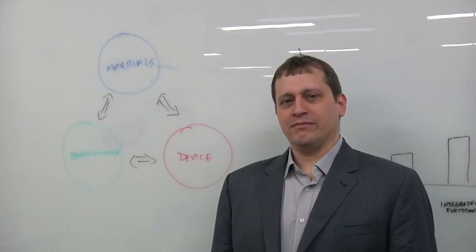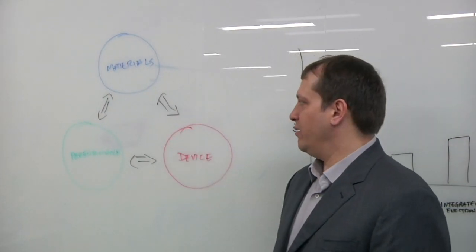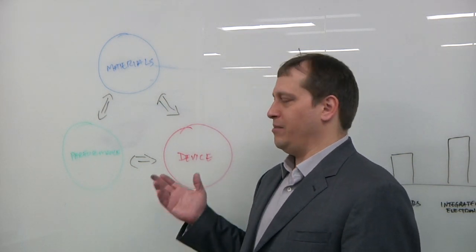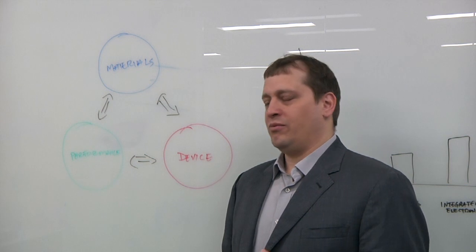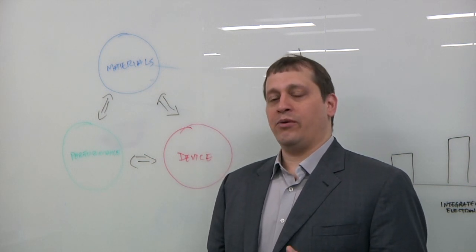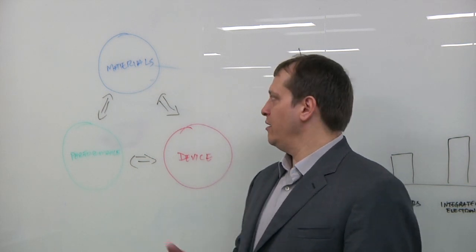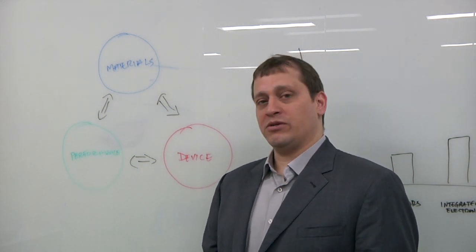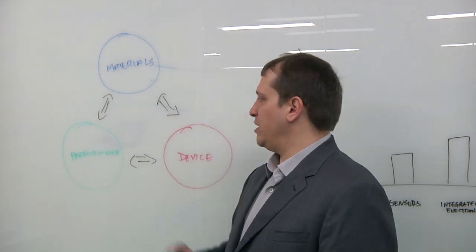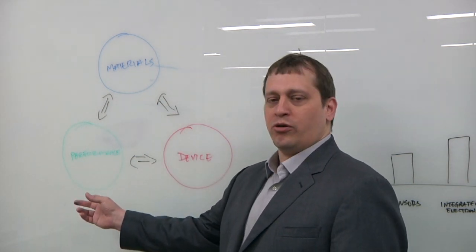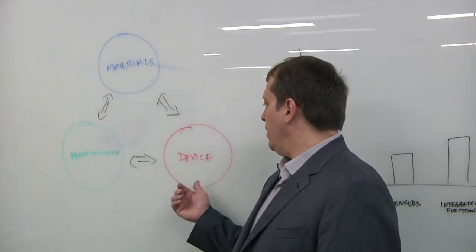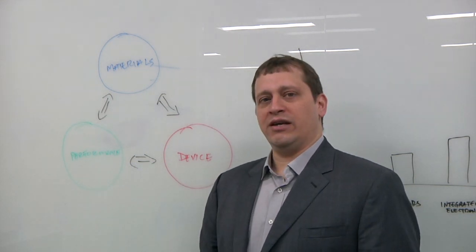Why don't you draw this out for us? Sure. What I'm showing here is a simplified diagram. What I want to highlight is how important materials are to the overall design. I show three different bubbles, all of equal importance: materials at the top, the performance or what you're trying to achieve in terms of sensor or device design, and then the device functionality.